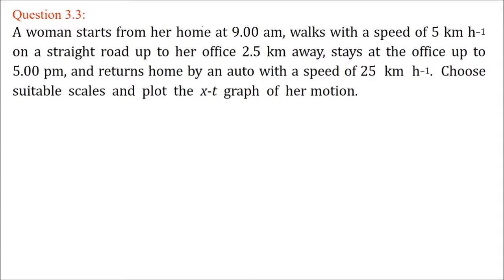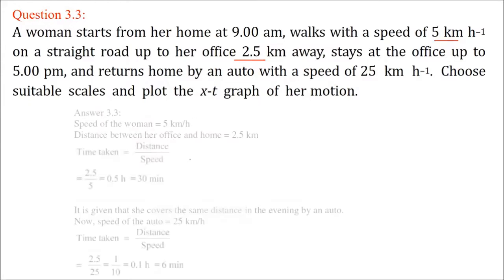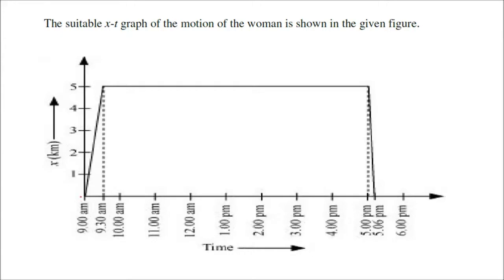A woman starts from her home at 9 AM, walks with a speed of 5 km/h on a straight road up to her office 2.5 km away, stays at the office up to 5 PM, and returns home by auto with a speed of 25 km/h. We have to plot the x-t graph. By 9:30 she reaches the office at 2.5 km. She stays from 9 to 5. Then in just 6 minutes she returns, since time = distance/speed gives 0.1 hour = 6 minutes.